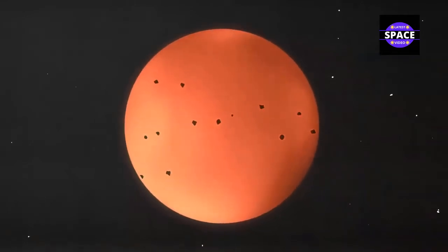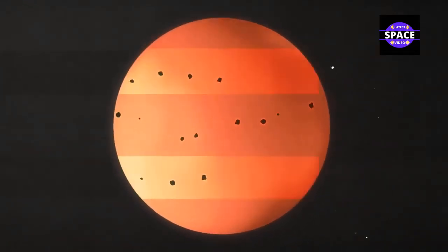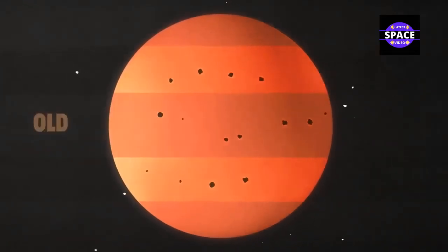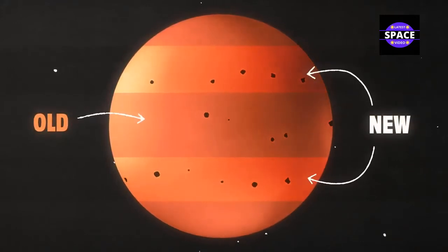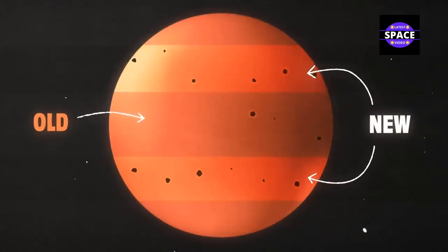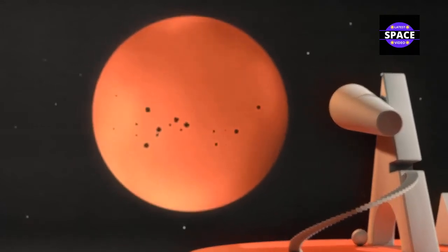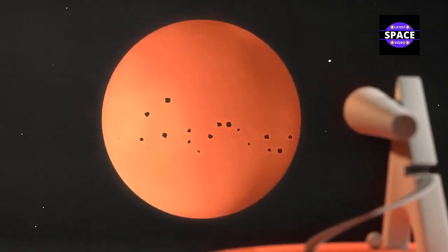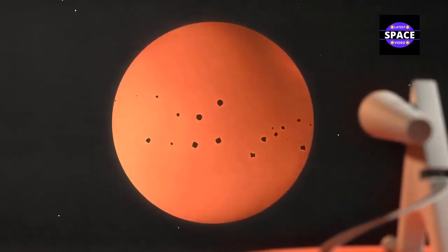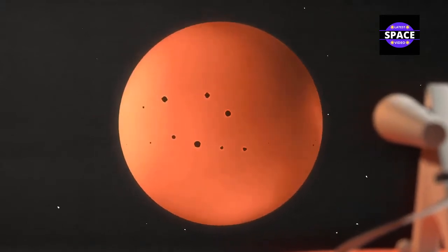But the transition between cycles is slow and messy. Cycles often overlap, creating freckles of old and new sunspots on the Sun at the same time. Scientists can only determine we're in the new cycle when the number of new sunspots overtake old ones, which can be six months to a year after the new cycle has begun.